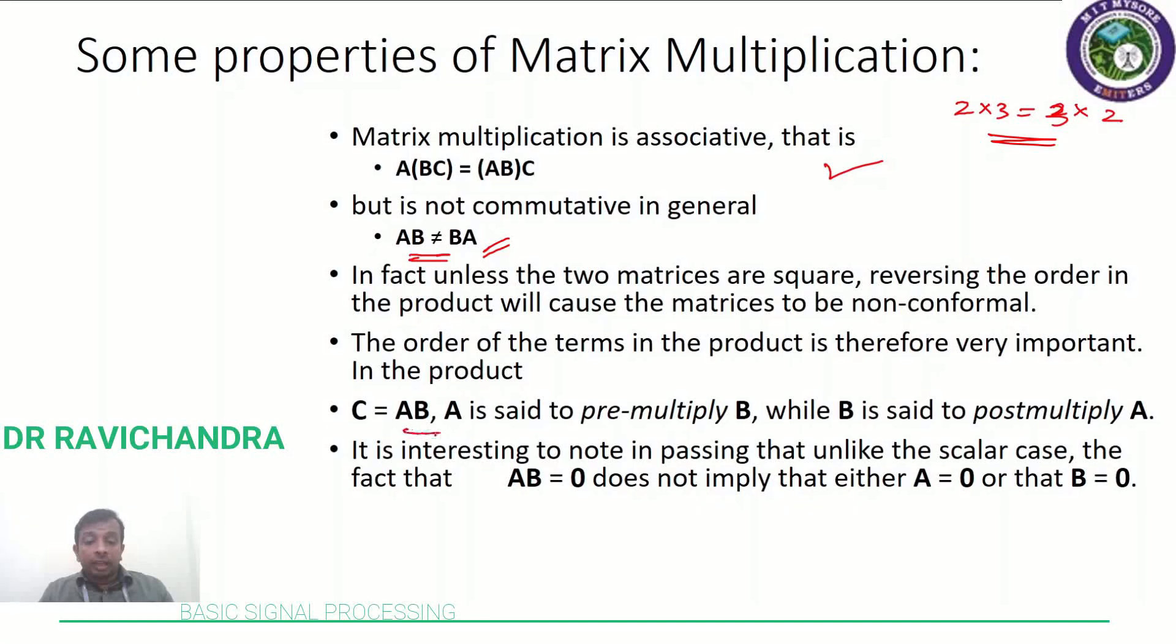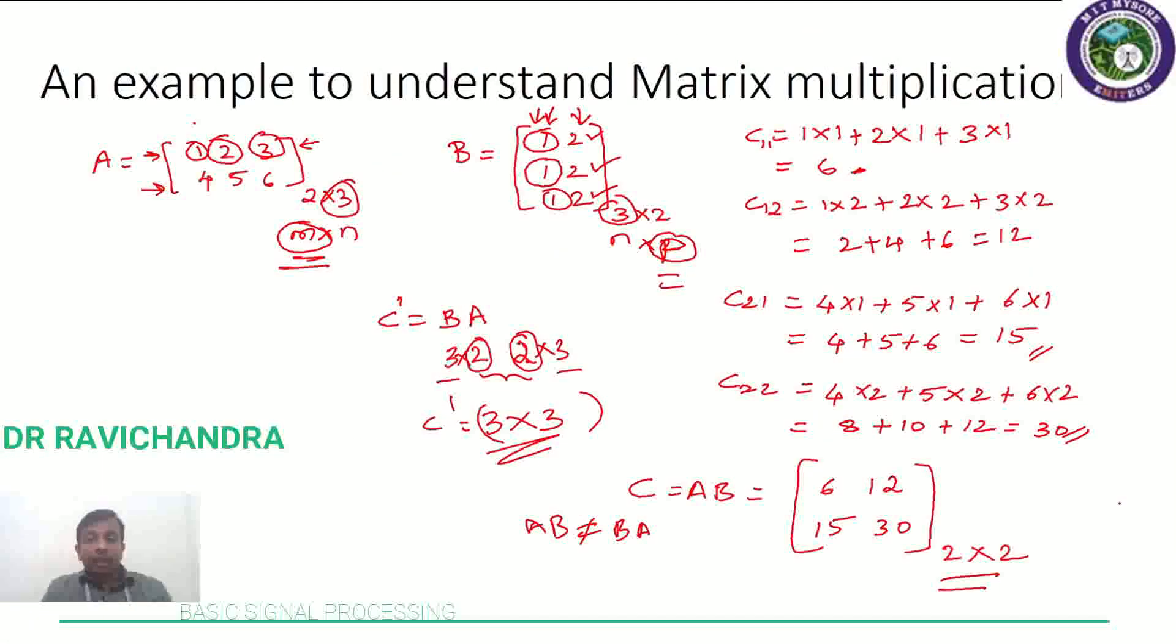And also, C = AB is said to pre-multiply B, where B is said to post-multiply A. So this is a bit of lingo used with respect to matrices. And also it is interesting to note that AB = 0 does not imply that either A = 0 or that B = 0.